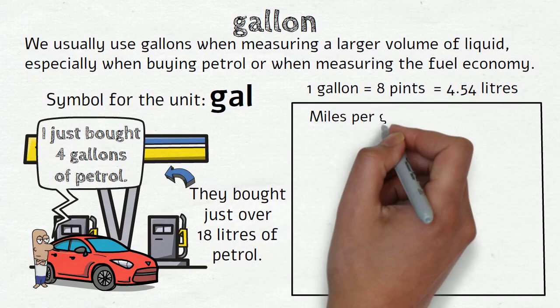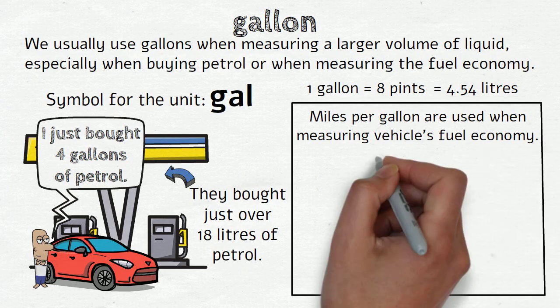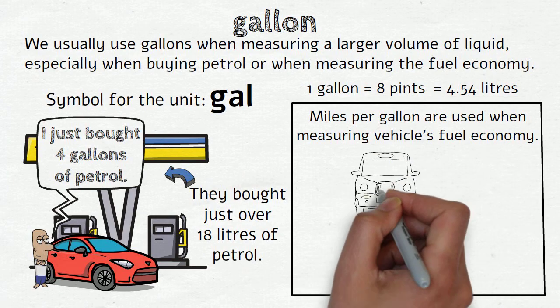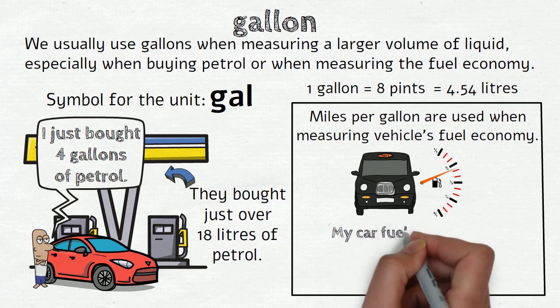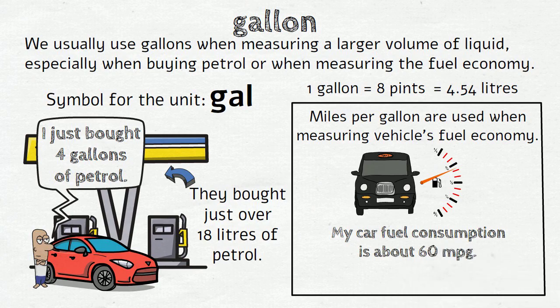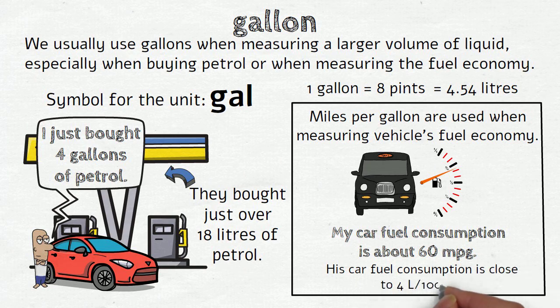Miles per gallon are used when measuring vehicles' fuel economy. So if someone says 'My car fuel consumption is about 60 miles per gallon,' it means that his car fuel consumption is close to 4 liters per 100 kilometers.